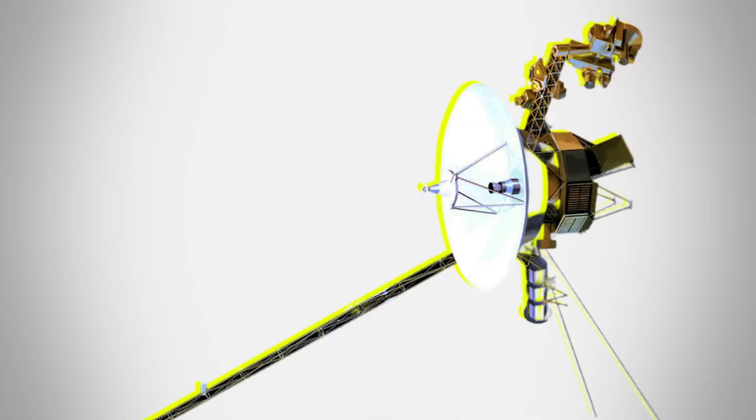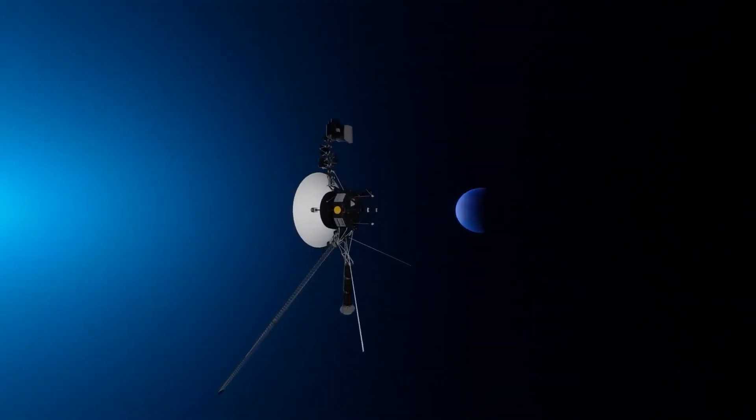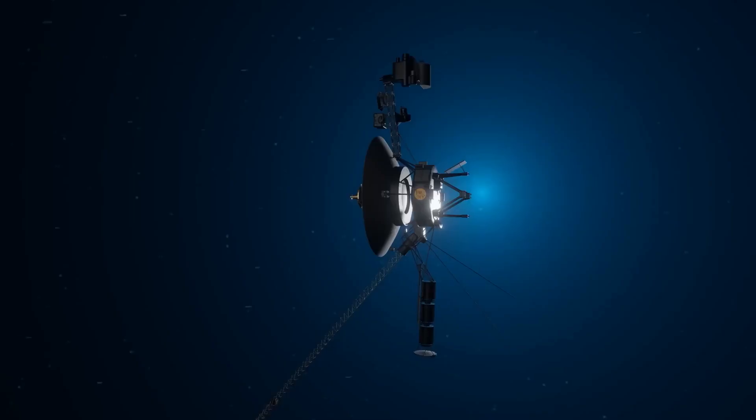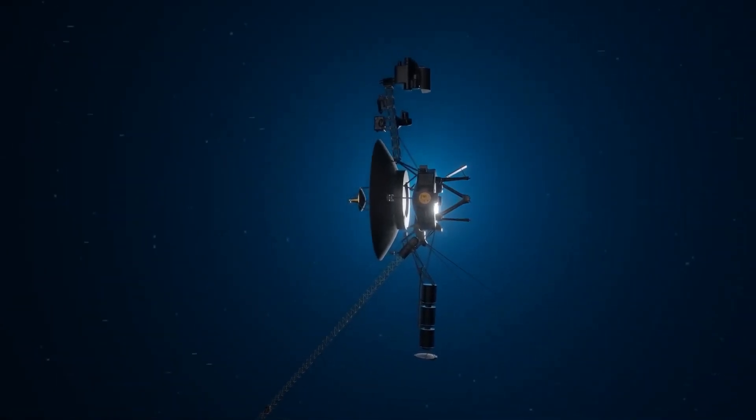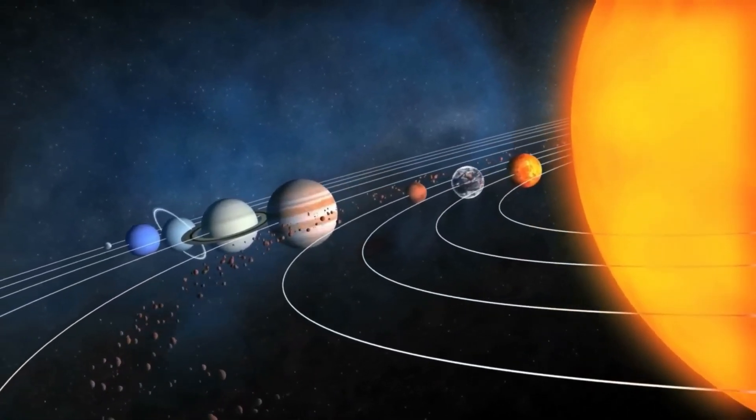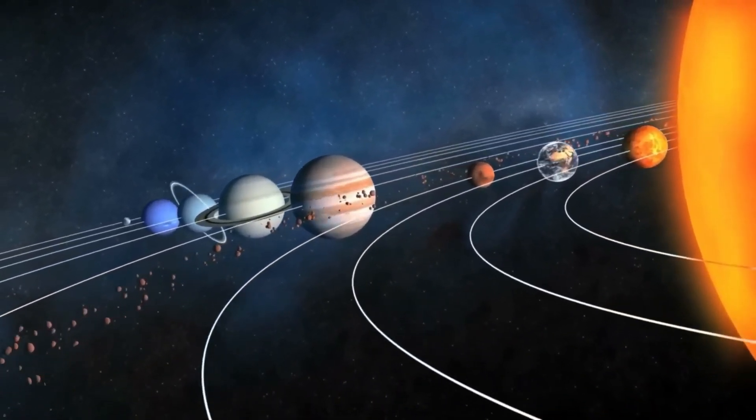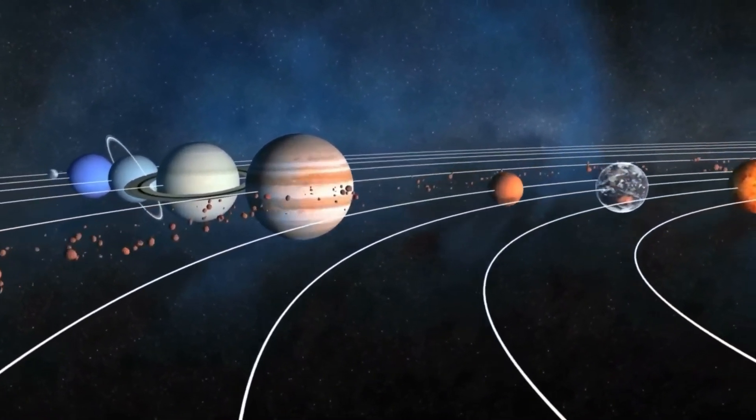What makes this spacecraft truly extraordinary is not just how long it's been functioning, but the sheer distance it has traveled. Voyager 2, along with its twin, Voyager 1, has journeyed farther from Earth than any other human-made object.